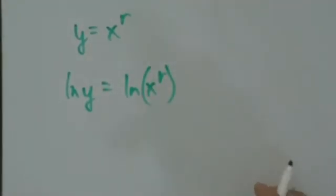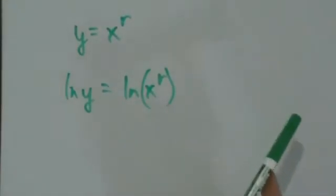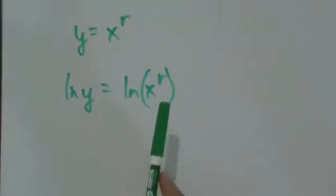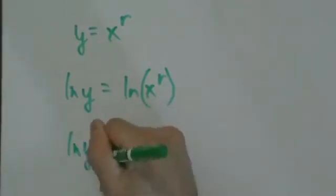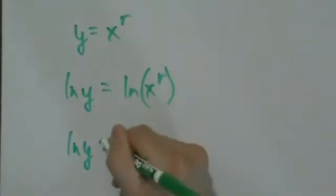Then the second step is use that pre-calculus rule, that pre-calculus power rule for logs, where you can write this exponent as a factor. So natural log of y equals r times natural log of x.